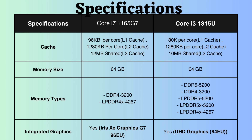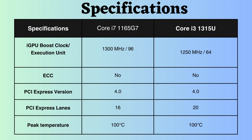Both processors support integrated graphics. The graphics frequency for the Core i7-1165G7 is slightly greater than that of the Core i3-1315U — the i7-1165G7 operates at 1,300 MHz, whereas the Core i3-1315U runs at 1,250 MHz. Additionally, the Core i7-1165G7 has a more powerful GPU than the Core i3-1315U.